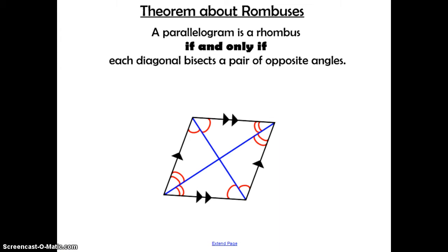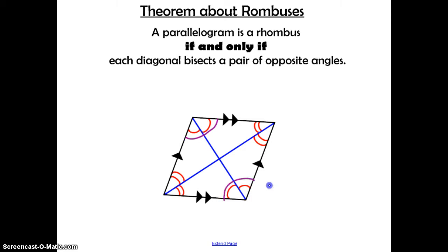Here's another theorem about rhombuses: a parallelogram is a rhombus if and only if each diagonal bisects a pair of opposite angles. Because a rhombus is a parallelogram, we already know that opposite angles are congruent. But what's special about the rhombus is that the diagonal bisects each of those angles, so each half is congruent. The same thing happens with the other diagonal — it bisects its angle into two congruent angles on opposite sides.